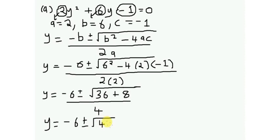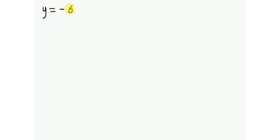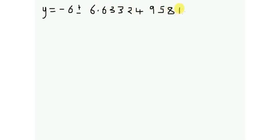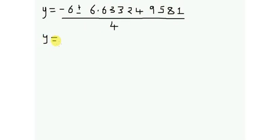Simplifying inside the square root: 36 plus 8 equals 44. So y equals negative 6 plus or minus the square root of 44, divided by 4. The square root of 44 is 6.63324958, divide by 4.